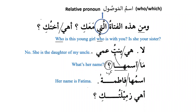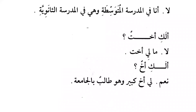Ahiya zamilatuki — 'Is she your classmate?' Hamza al-istifham is used to ask a yes/no question. Zamilatuki is mudaf and mudaf ilayhi, because all attached pronouns are used as mudaf ilayhi. She says: La — no. Ana fil madrasati al-mutawassitati wa hiya fil madrasati al-thanawiyya — 'I am in the middle school and she is in the secondary school.'